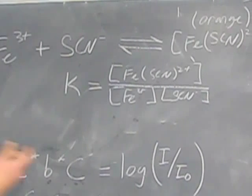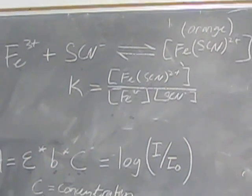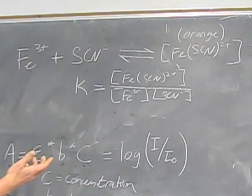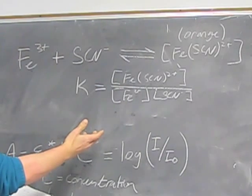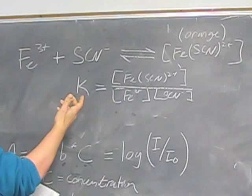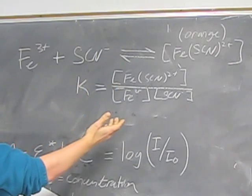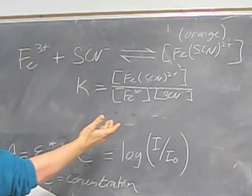Since it's not a strong acid or a strong base, it doesn't completely dissociate with water. So we get this equilibrium constant, which is the concentration of the product over the concentration of the reactants.